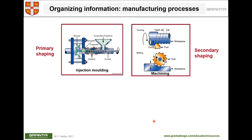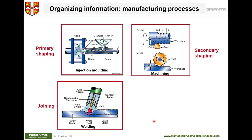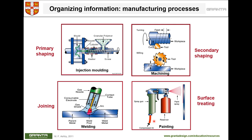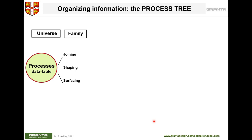For manufacturing processes, there are four main categories: primary shaping — such as injection molding, compression molding, and 3D printing; secondary shaping — using machines like lathes and mills to achieve the desired geometry; joining — when connecting two materials; and surface treating — painting, coating, or polishing as the final step in your process tree.